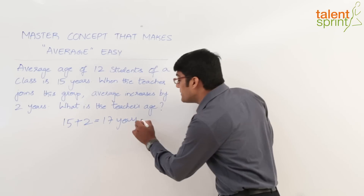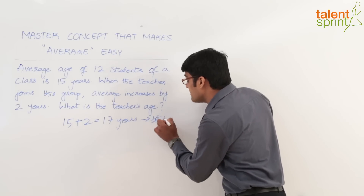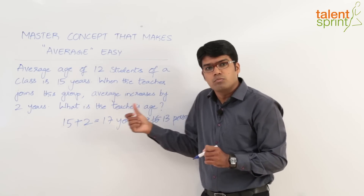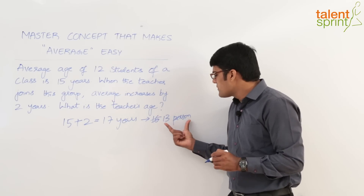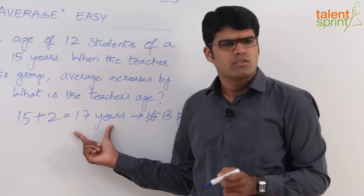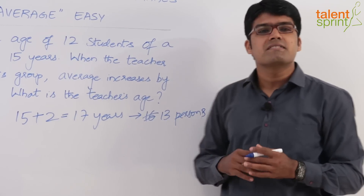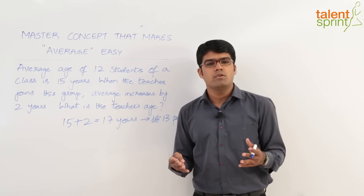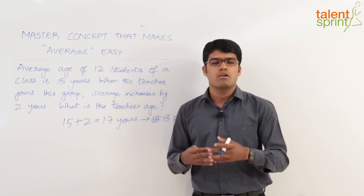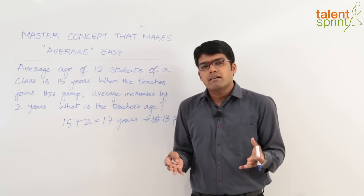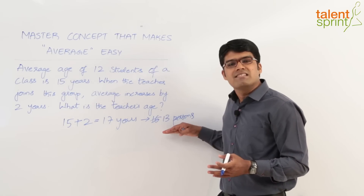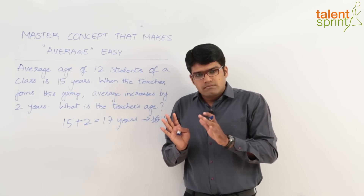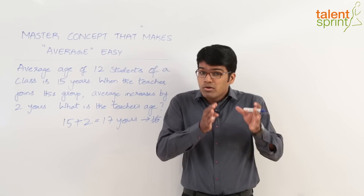This new average of 17 years is for 13 persons — 12 students plus the teacher who has joined the group. For 13 persons the average is 17 years. By equal distribution, this means each of the 13 persons is 17 years old. Of course, we know the teacher's actual age will be much more than 17 — but going by equal distribution, all 13 persons are 17 years old.